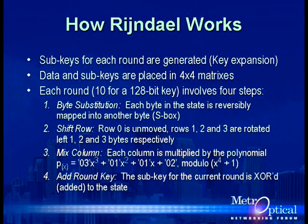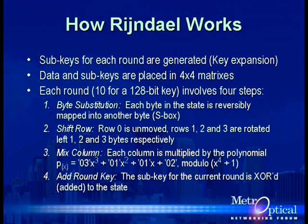Here's how Rijndael works. To encrypt a block, subkeys for each round and the input data are placed in 4×4 matrices. For each round except the last, there are four steps: a byte substitution (a byte-level nonlinear transformation), a shift row that moves the data over the matrix, a mixed column which is a matrix multiplication of each column against a fixed polynomial in a Galois field, and a simple XOR addition of the sub-round key into the state. Those operations repeat 10 times for a 128-bit key, 12 times for 192-bit, and 14 times for 256-bit. Byte substitution can be implemented as a lookup table, and shift row and add round key are trivial — it's the mixed column stage that needs attention.